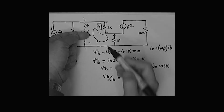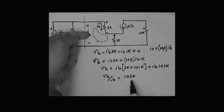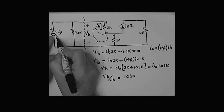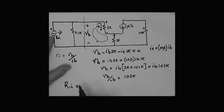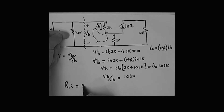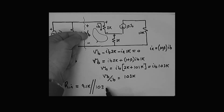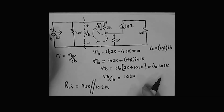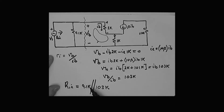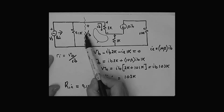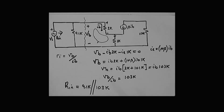Now I can find V_B over I_B, which simply equals 103k. So looking in here, I'm seeing a 103k resistance. This R_in is then equal to 9.1k in parallel with 103k. What dominates that input resistance is the 9.1k, since it's significantly smaller than the 103k seen looking the other way. That's the method you can use to calculate input resistance - the resistance that the signal source actually sees.